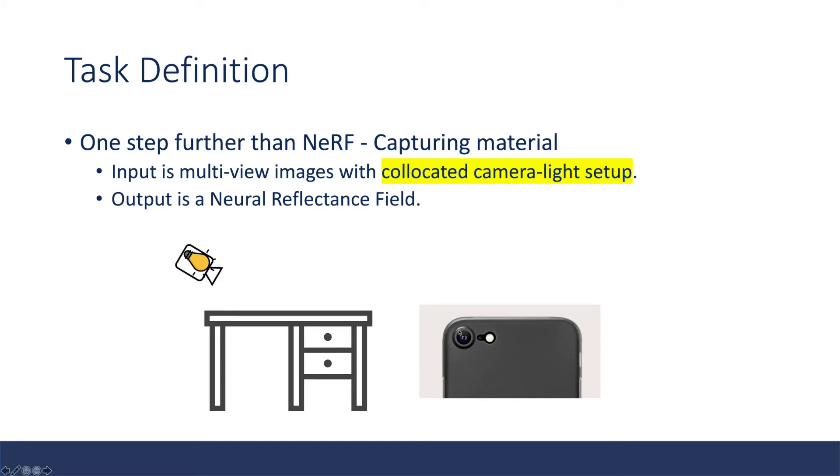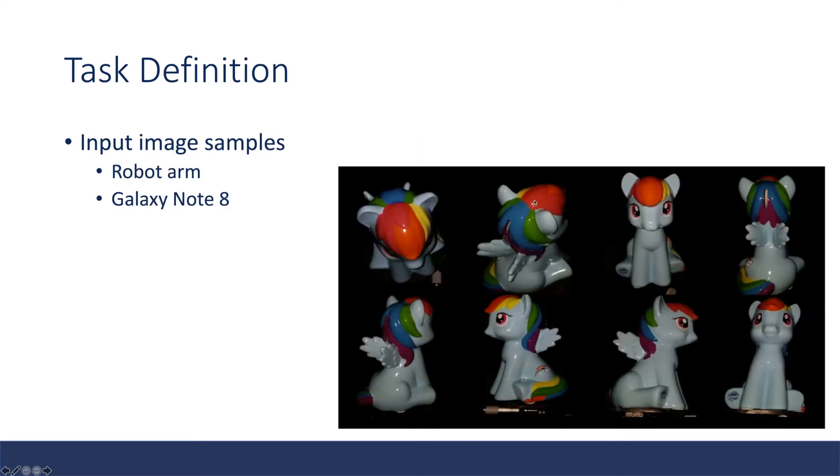If you imagine we have a cell phone and place the object in a dark room, I can just capture a video with this cell phone flash and camera, then we can consider this as a co-located camera light setup. Here are some input image samples.